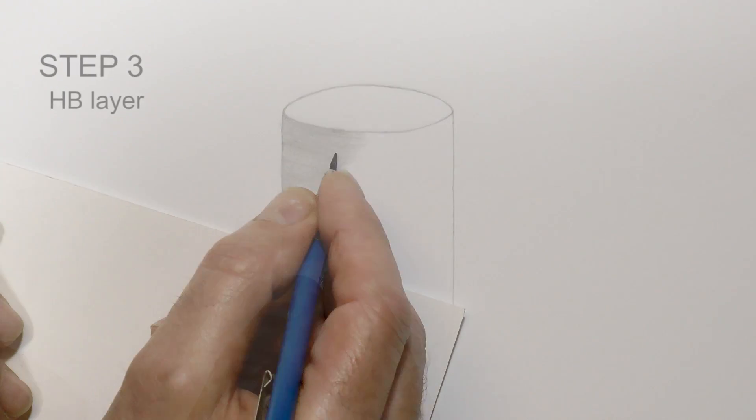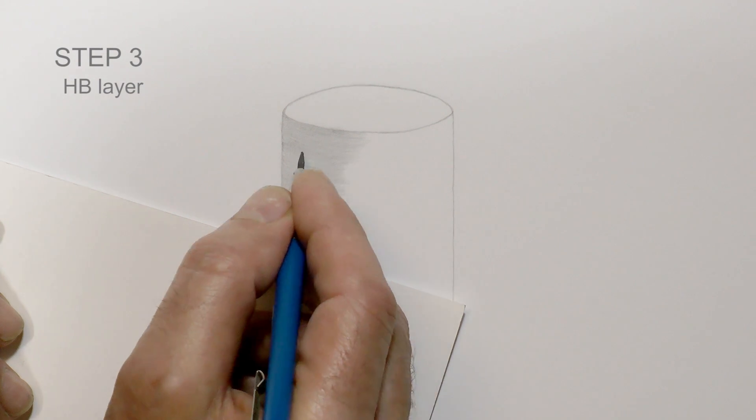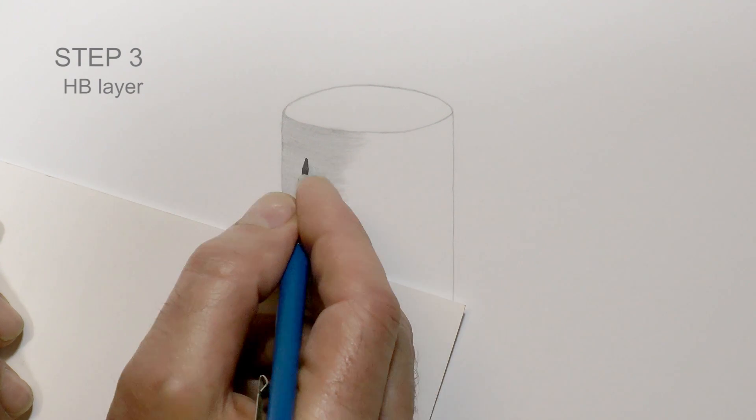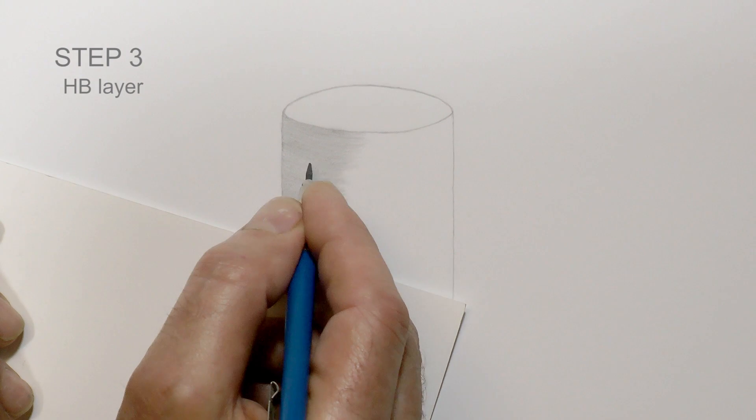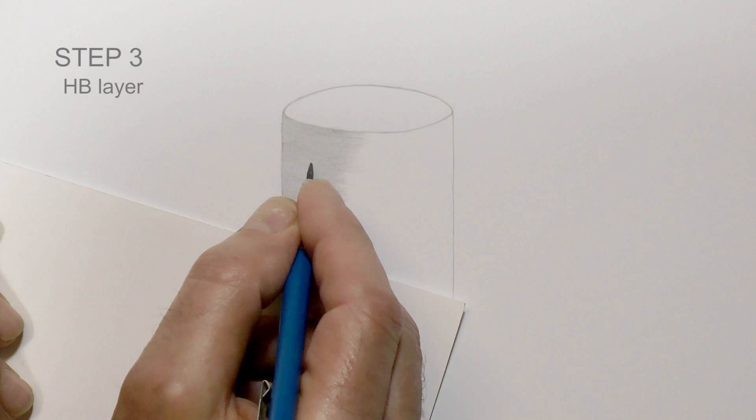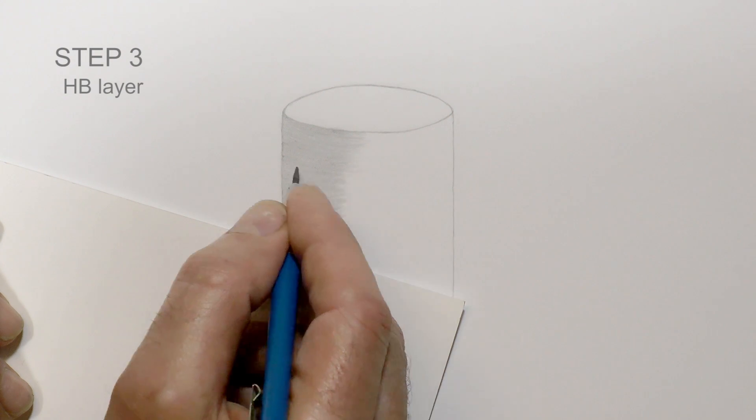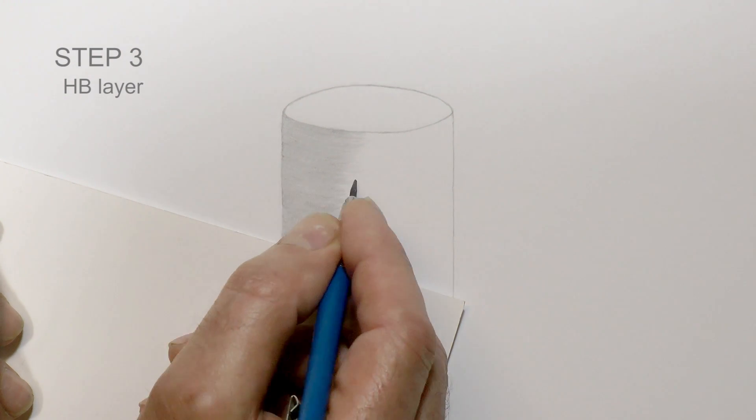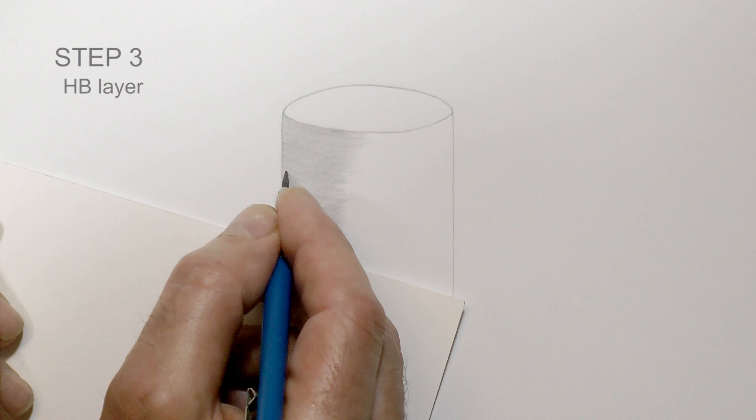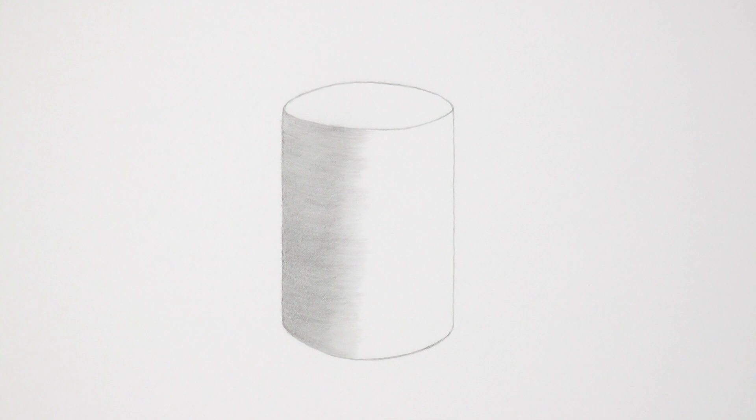Now change to using your HB pencil and shade halfway around the cylinder. As previously, begin at the left hand edge and taper fade the ends of all your lines. You can also use this layer to fill any gaps in the 2B shading. As a bonus, your HB will smooth the 2B by filling any white holes in the tooth. Use a fairly light touch. Let your graphite sit on top of the paper so it will blend more effectively.